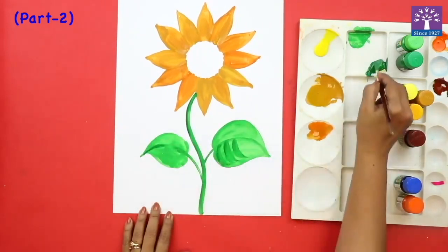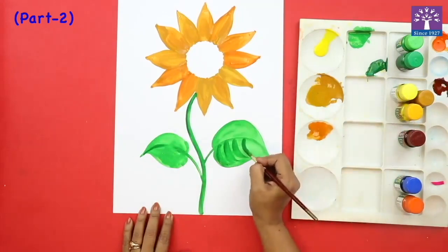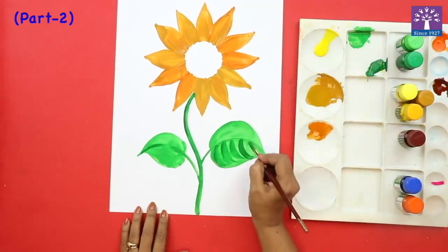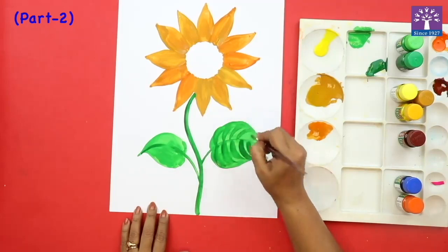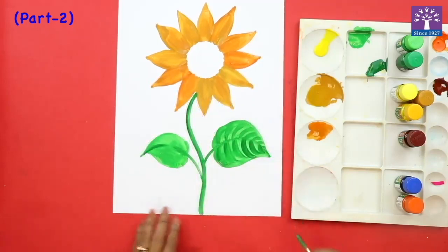Dip my brush in dark green color and I am giving very small strokes so they are looking like the veins. The remaining details we can add with the crayons.